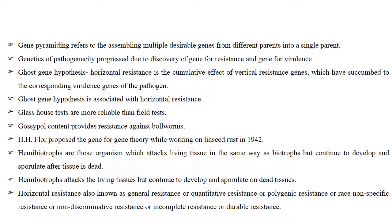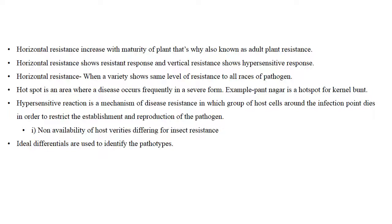Horizontal resistance is also known as general resistance, quantitative resistance, polygenic resistance, non-race-specific resistance, non-discriminative resistance, incomplete resistance, or durable resistance. Horizontal resistance increases with maturity of plants, which is why it is also known as adult plant resistance.